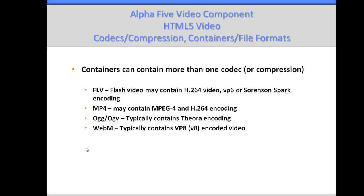There's a lot of confusion on codecs, compression, and containers, so let me help clarify that. The containers or file types you typically see are FLV, MP4, OGG, and WebM. Each container can contain one or more codecs. Flash typically has H.264 but can also have VP6 or Sorenson Spark encoding. MP4 typically contains MPEG4 or H.264 encoding. OGG typically contains Theora encoding, and WebM typically contains VP8 encoded video.